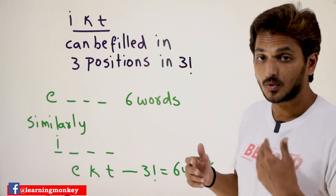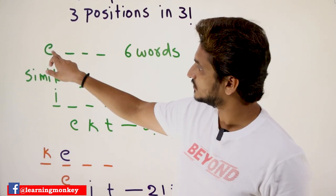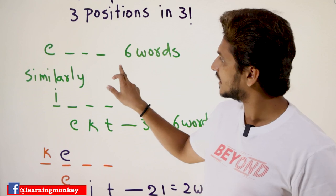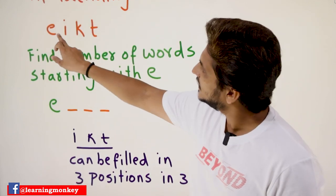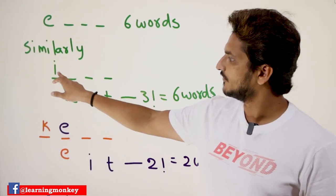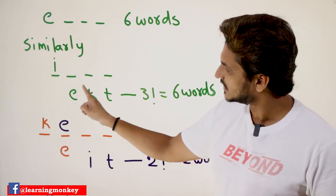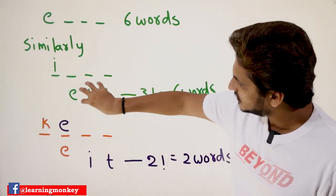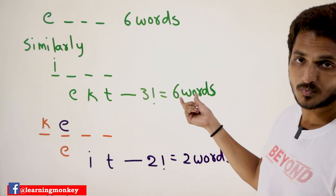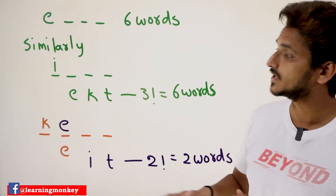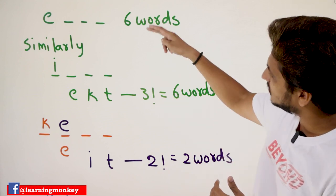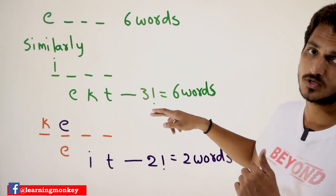We go to the next possibility. Similarly, you can place I in the first position, because according to dictionary order E is next followed by I. If you place I in the first position, the remaining three characters are E, K, T. You can place these three characters in three factorial ways — so six words are possible starting with I.